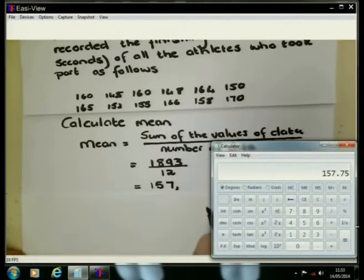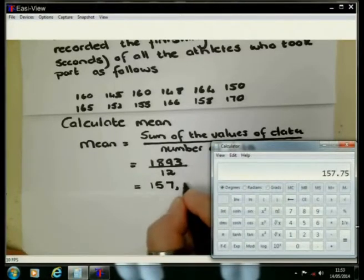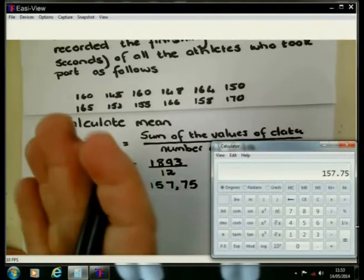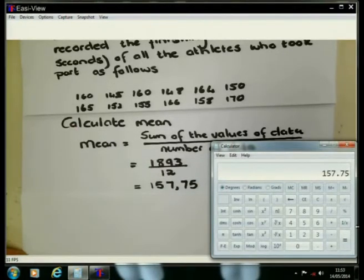So I am going to give this answer as 157.75, and this is just the mean time. So this is in seconds. The mean time, the average time that it took the athletes to run around the athletics track two times, finishing 800 meters.